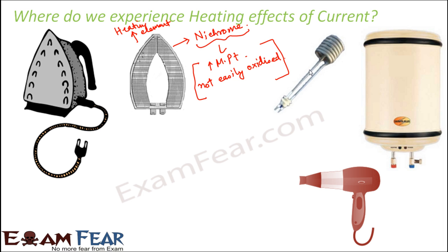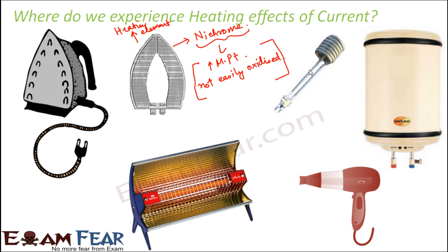The hair dryer, which is used to dry your hair quickly, also has a nichrome wire inside wrapped around an insulating mica board. Nichrome is used here again because of its advantages — high melting point and not easily oxidized. If you have ever used a hair dryer, when you plug it in and switch it on, you can feel hot air being blown onto your hair, and that hot air helps your hair to dry.